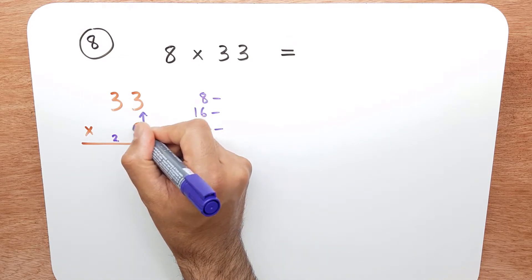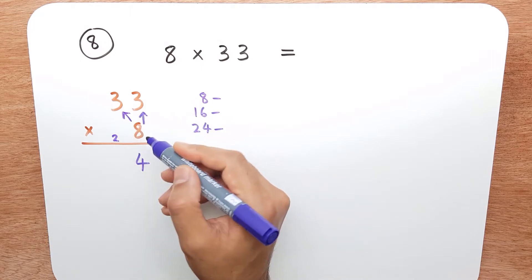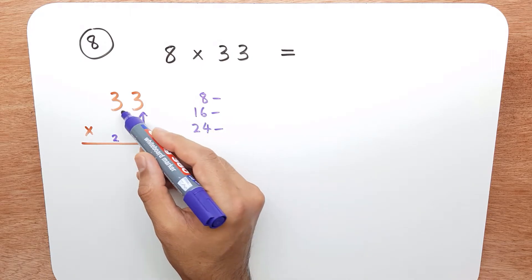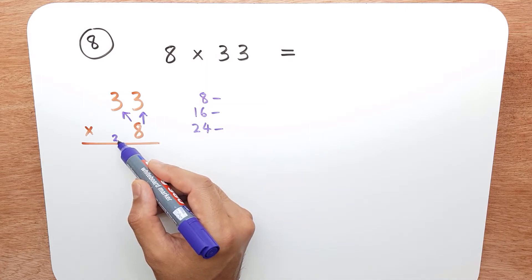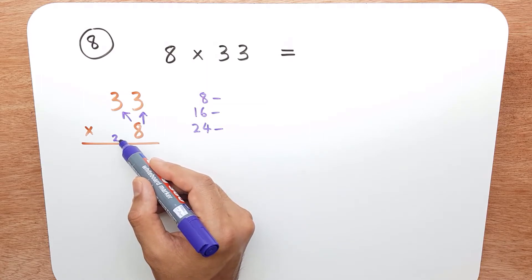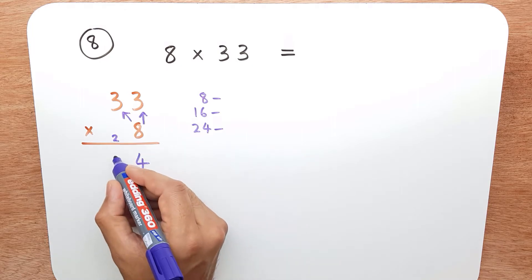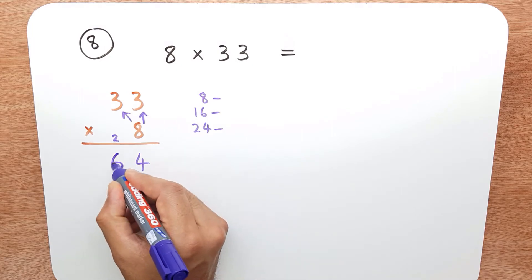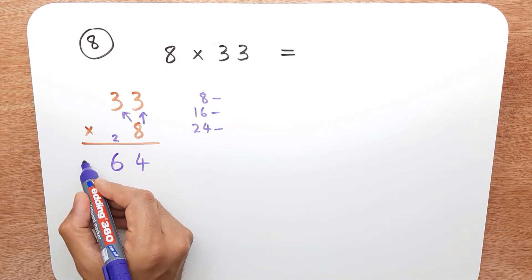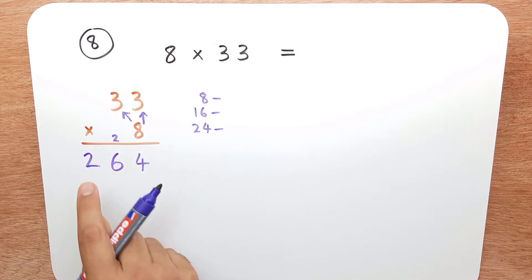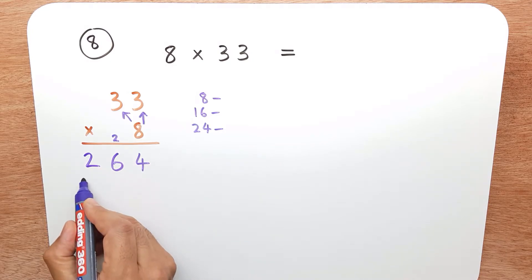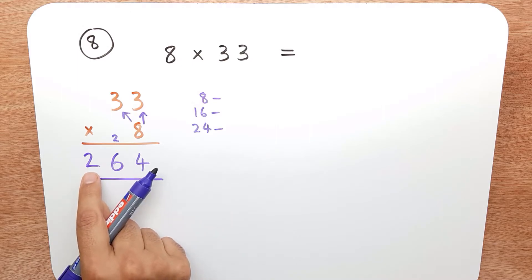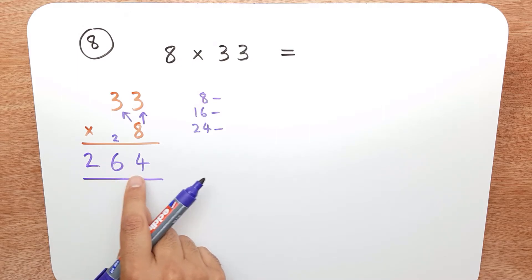Now I do eight times three again, which is twenty-four, plus the two we've carried over, so that makes it twenty-six. I put the six down and carry the two over to the next column. Because we have nothing to do, we can write it straight down. So our answer is two hundred and sixty-four.